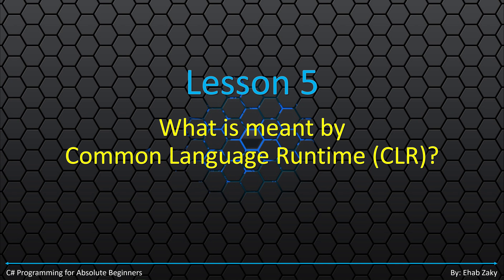To enable the processor to do so, there is something called a Compiler. This compiler translates our code from the programming language we use to the machine language that the computer processor understands. Each language has its own compiler that understands it well and is able to convert its code to equivalent machine code.